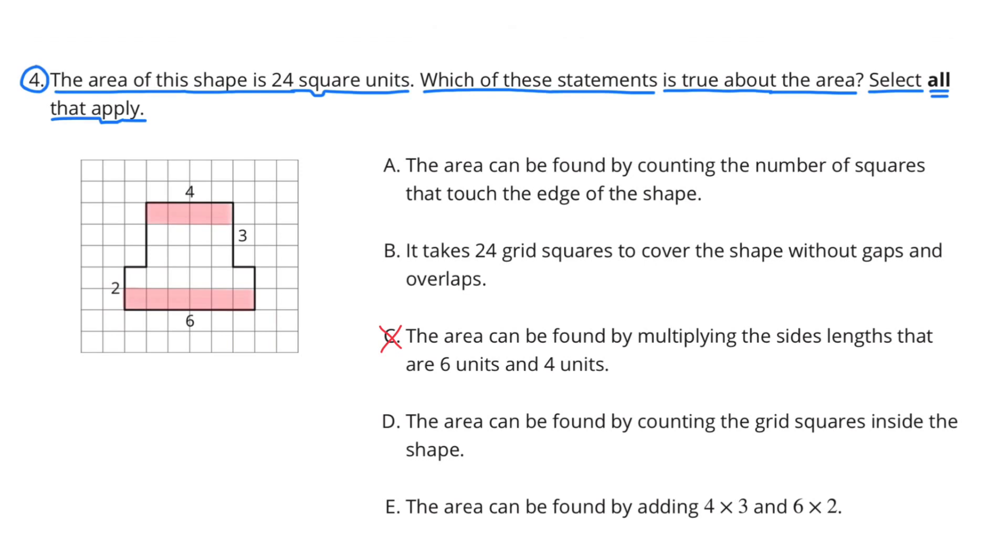C does not apply. Even though 6 times 4 does equal 24, you would need to multiply the base times the height of quadrilaterals to find the area. And in example C, they're multiplying two bases times one another. Example D is correct. The area can be found by counting the grid squares inside the shape. There are 24 grid squares inside the shape.